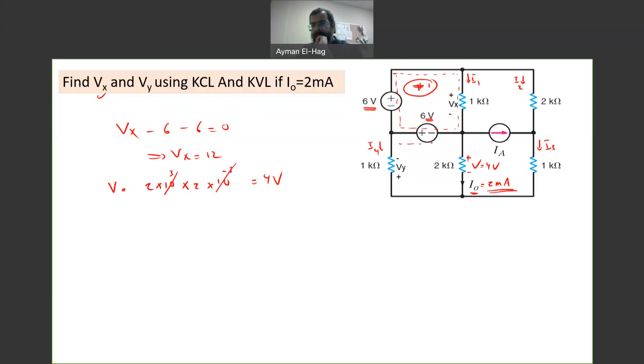So now, if I look to loop number 2, I know 6 volt. I know 4 volt. So I can find VY directly. So apply KVL to loop number 2.